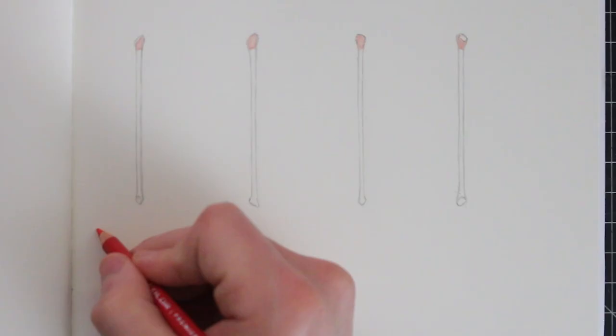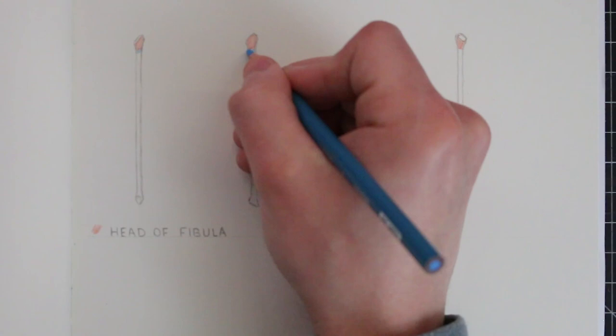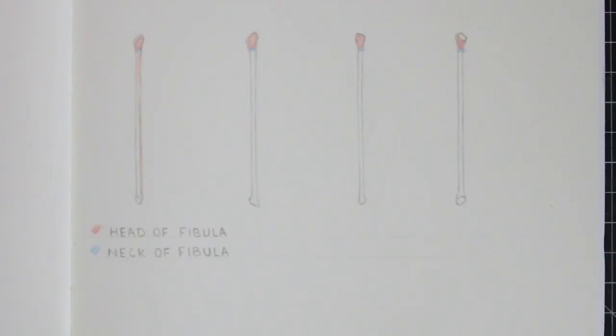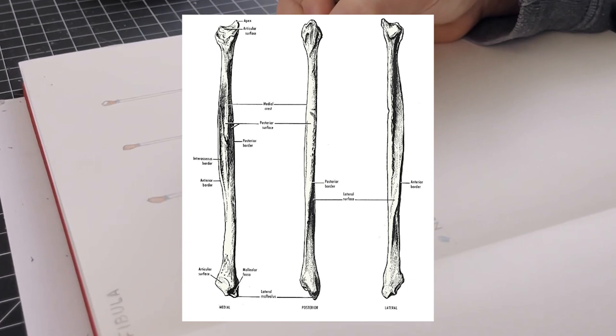At the top there is the head of the fibula. This is the part which connects to the tibia. At the head there is the fibula articular surface which is the part that directly joins to the tibia. Below this there is the neck of the fibula, and again like most of these bones, this is the section below the head before the body.